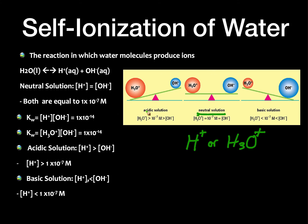If we have an acidic solution, H⁺ will be greater than OH⁻, so H⁺ will be greater than 1×10⁻⁷. If we have a basic solution, H⁺ will be less than the OH⁻ concentration, so H⁺ will be less than 1×10⁻⁷ molar.